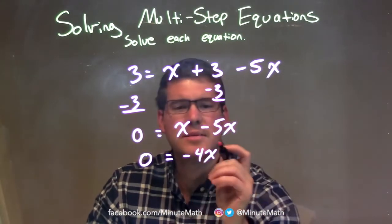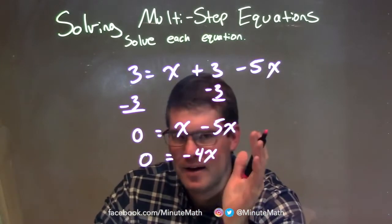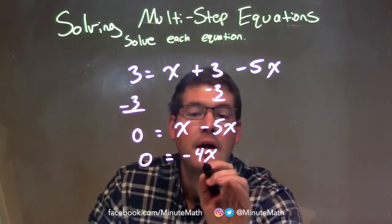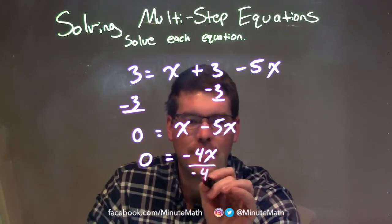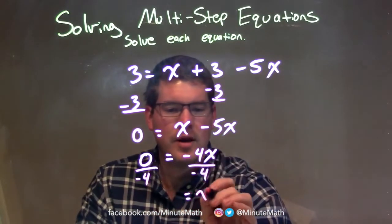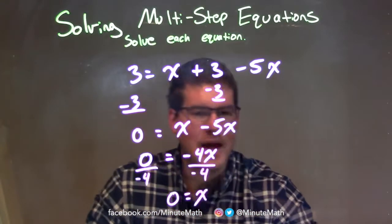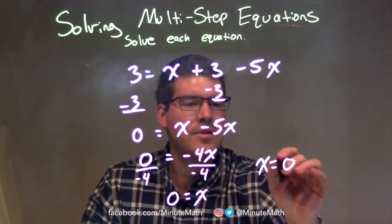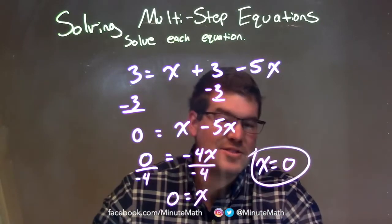So we have 0 equals negative 4x. Be careful here — multiplication is going on between the negative 4 and the x. I'm going to divide by negative 4 on both sides. By dividing by negative 4, I have x by itself on the right, and 0 divided by negative 4 is 0 on the left. So our final answer is x equals 0.